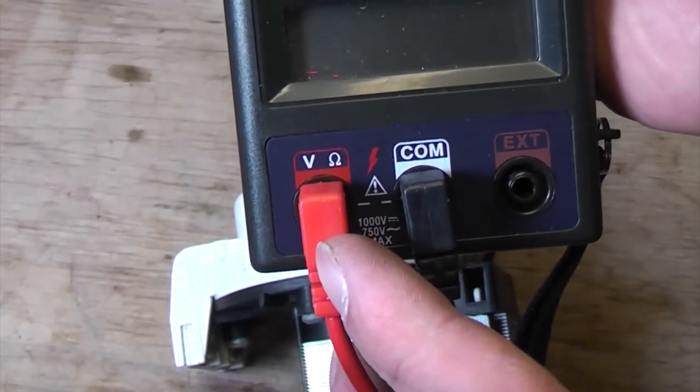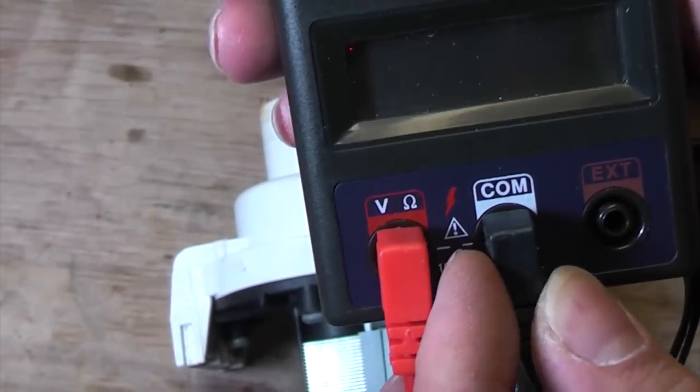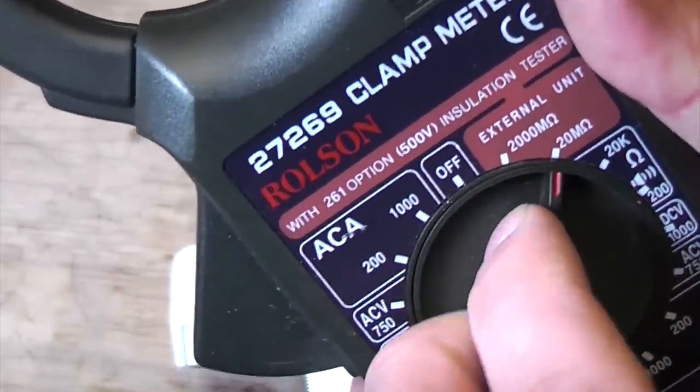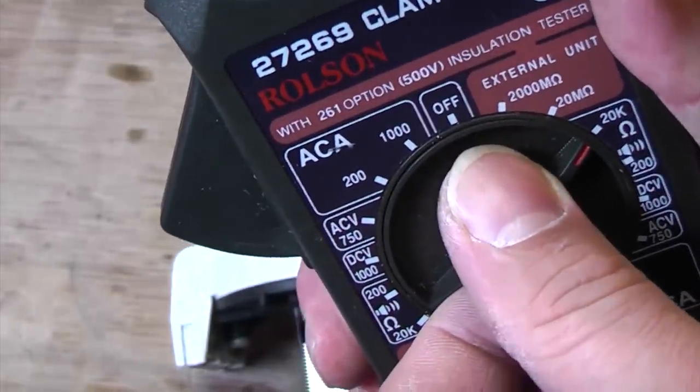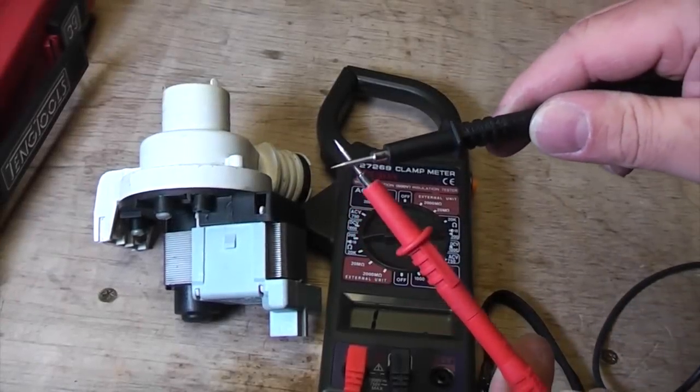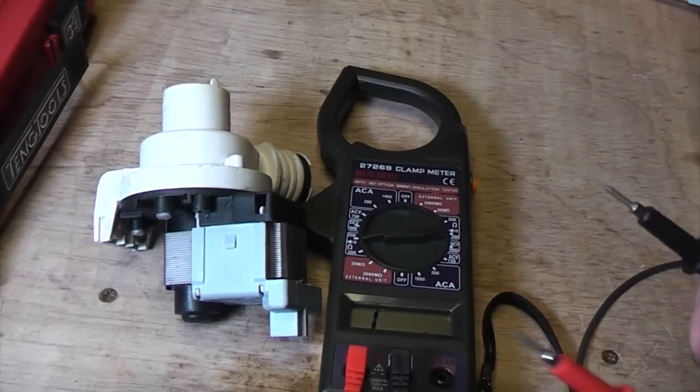I've put the leads in the correct sockets, which is the red socket and the common socket, and then I'm going to switch the multimeter onto ohms with beep, just to test it's working. I'm just going to touch the two probes together and you can hear that it is beeping, so now we know that the meter is working.